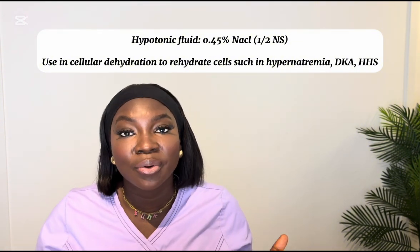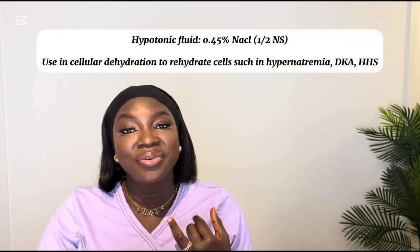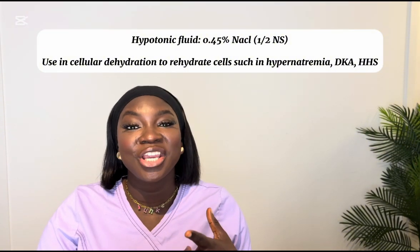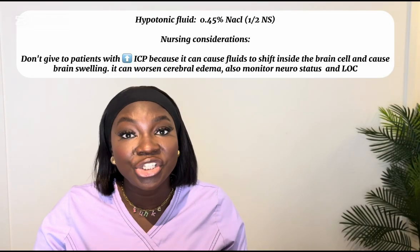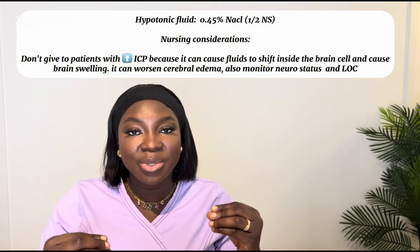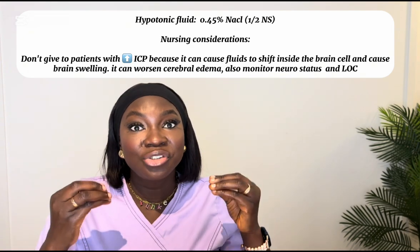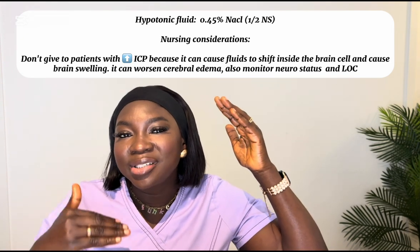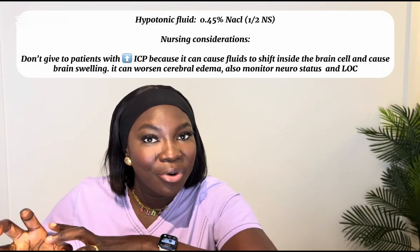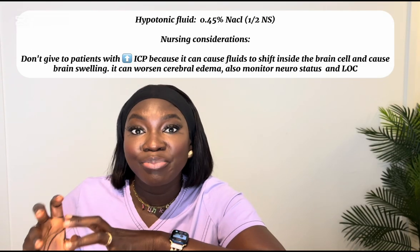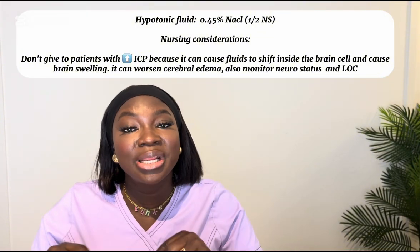The first example of a hypotonic fluid is 0.45 normal saline (half saline). It is used for cellular dehydration to rehydrate the cell, in conditions like hyponatremia, diabetic ketoacidosis (DKA), and HHS. Do not give this fluid to patients with increased intracranial pressure, because hypotonic fluids shift water into the cell, causing brain cells to swell, leading to cerebral edema.